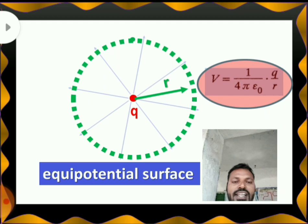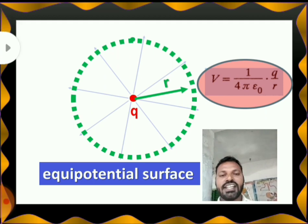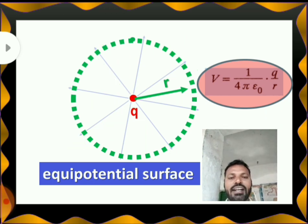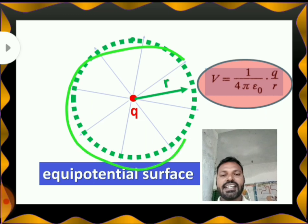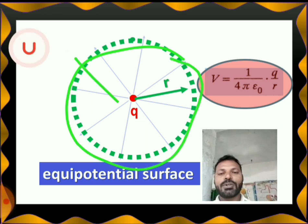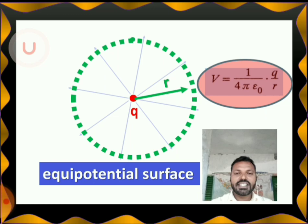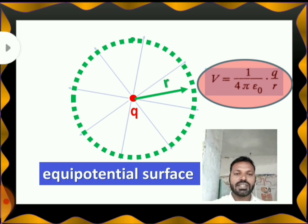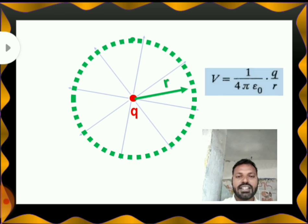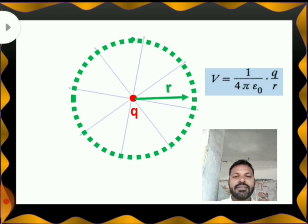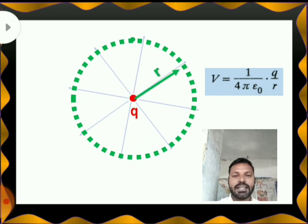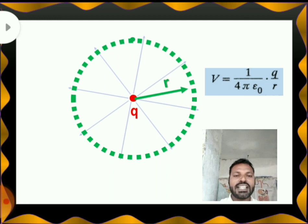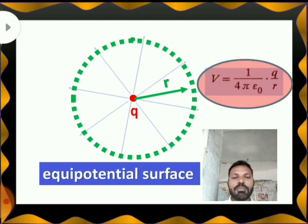If you clearly observe here, the direction of the electric field is everywhere outward from the center. But my equipotential surface is a circle — that is perpendicular to the direction of the electric field in case of a point charge. It is very clear: if I take every point, all points are at the same distance, so my V becomes equal for all points. The locus of all these points which have the same potential is called the equipotential surface.